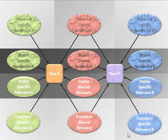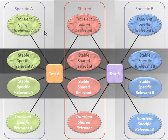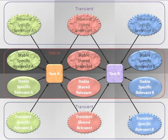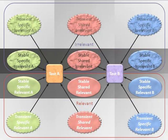To highlight the three different dimensions: the first dimension is how specific the influence is — some influences affect test A, some affect test B, and some affect both A and B and are shared. The second dimension is how stable the influence is — some influences last and some do not. Stability is not really dichotomous; there are degrees of stability, from very transient to somewhat transient to somewhat stable to very stable. The last dimension is relevance — some influences are relevant to the construct being measured, and some are irrelevant.